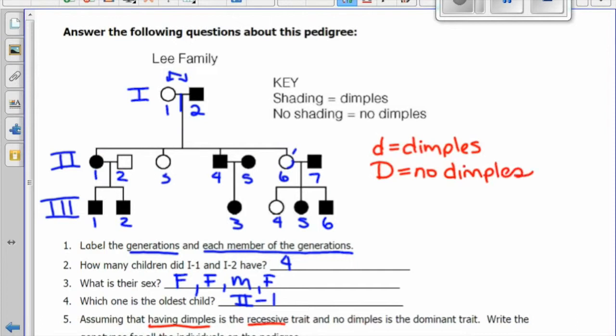We know that everyone shaded in has dimples, and so all of them have to have the recessive genotype, two little d's.